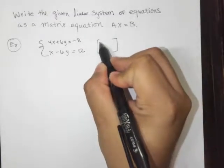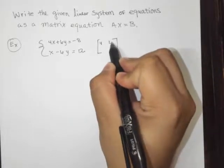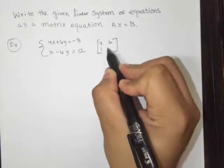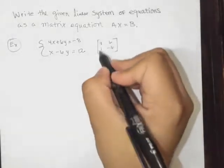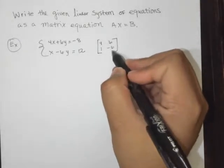So let's go ahead and write that: 4 and 6, and then 1 and negative 6. Notice this is the x column, and this is the y column.